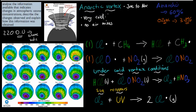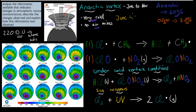The Antarctic vortex creates very cold conditions and prevents air mixing. During winter — June is around peak winter — there's no sun at the Antarctic. So we have no sun, very cold conditions, and no air mixing. We talked about the two equations that make the chain reaction stop: a chlorine radical combining with methane to form hydrogen chloride and a methane radical, or a chlorine-oxygen radical combining with nitrogen dioxide to form chlorine nitrate. Both of these stop the chain reaction — there are no more chlorine radicals.